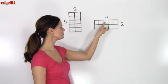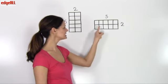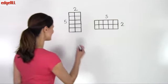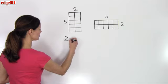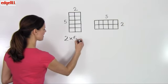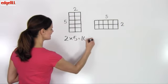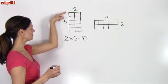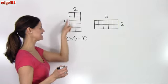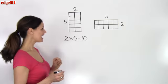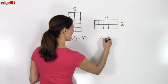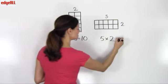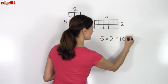One, two, three, four, five, six, seven, eight, nine, 10. So we can see that two times five, in this case, equals 10. A two block by five block rectangle contains 10 blocks. And a five by two rectangle, or five times two, also equals 10.